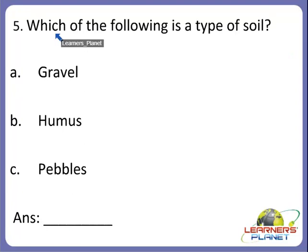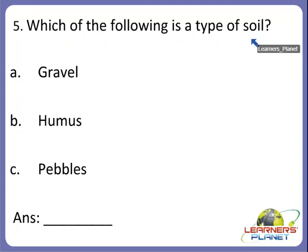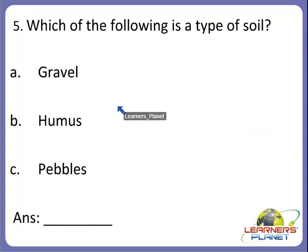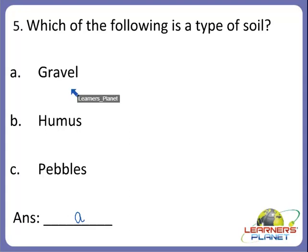Now the next one: which of the following is a type of soil? Is it A. gravel, B. humus, or C. pebbles? We just discussed the three main types of soil. Yes, it is A — gravel. Gravel is a type of soil amongst all three.